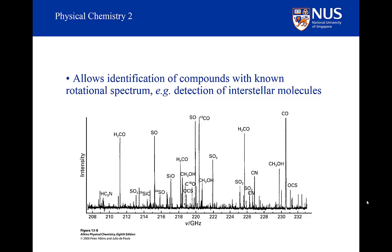One of the really exciting applications is the use of rotational spectroscopy to identify and quantify molecules remotely. This is a spectrum from an interstellar dust cloud. We can identify these molecules because we know precisely what the frequency of each line is — even a single line is sufficient because we know precisely what transition it corresponds to, since we can solve the Schrödinger equation.